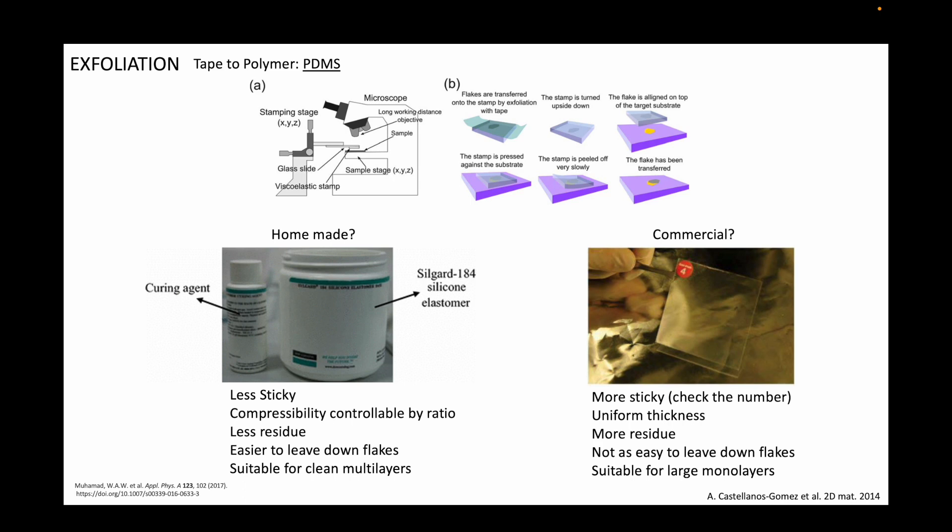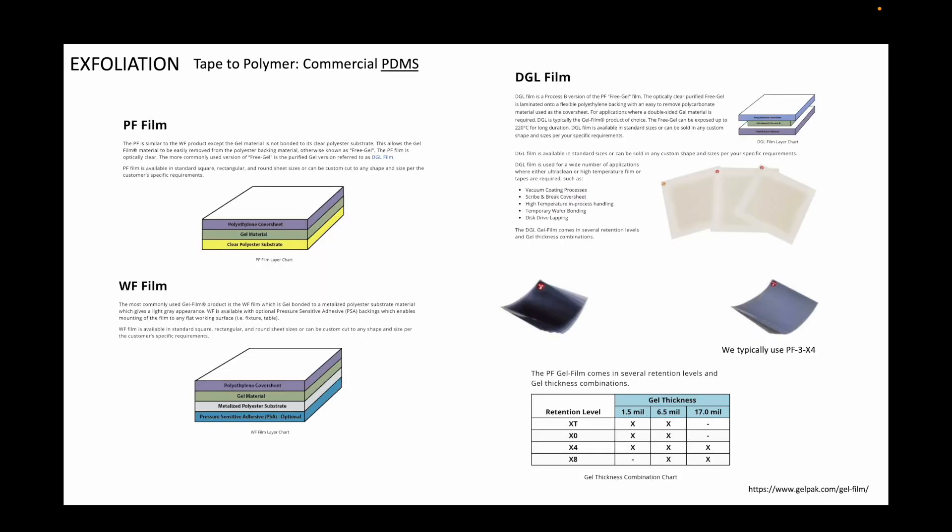The commercial version of the PDMS is sold under the name GelFilm from GelPak. They come in various tack levels and thicknesses. The standard number is 4, which has medium tack and with this finding a monolayer is quite easier than the homemade version of the PDMS. However, the commercial gel films can be quite expensive compared to the elastomer kit. Also, I find that these tend to be easier to work with but tend to be a bit dirtier than the homemade version. There are several ways in which the notorious residues can be reduced, but that's perhaps a topic for another day.